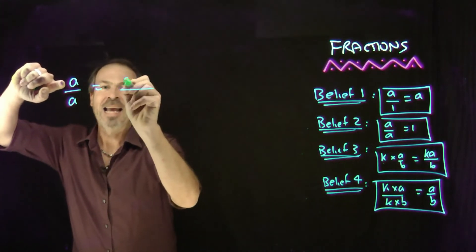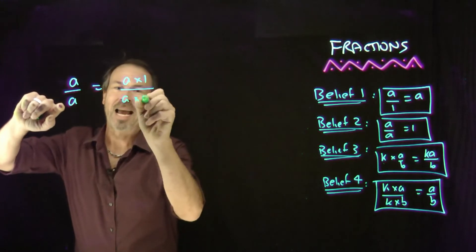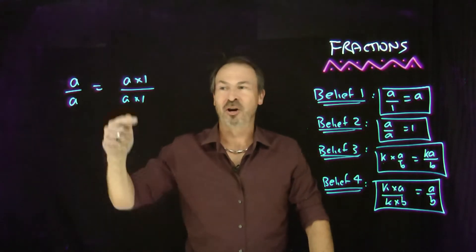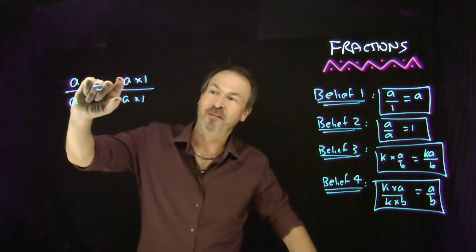Well, the clever thing is to think of, well, by order arithmetic, a is a times one. That's still a. a is also a times one. That's still a. So let's rewrite it that way. The top number is a times one, the bottom number is a times one.